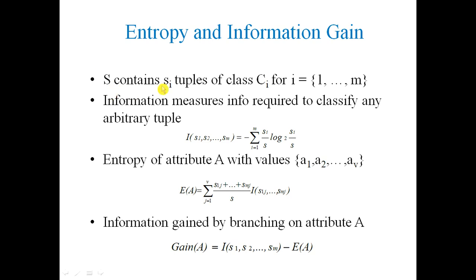Let's take an example where capital S contains the Si tuples of class Ci, for i equal to 1 to M. The information measure is the info required to classify any arbitrary tuple. So I(S1, S2) equals minus summation i=1 to M of (Si/S) log(Si/S). The general equation is: I(S1, S2, ..., SM) = minus summation i=1 to M of (Si/S) log(Si/S).